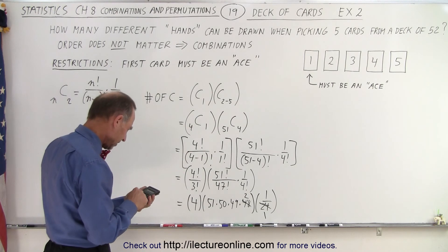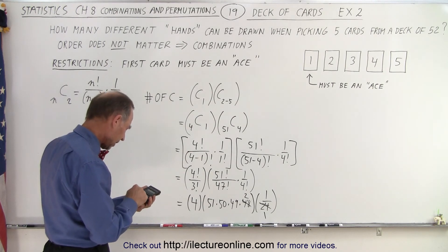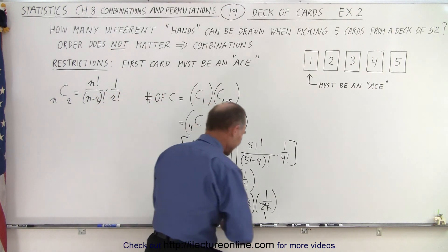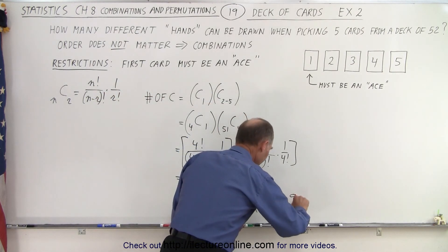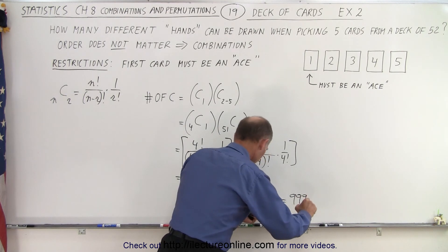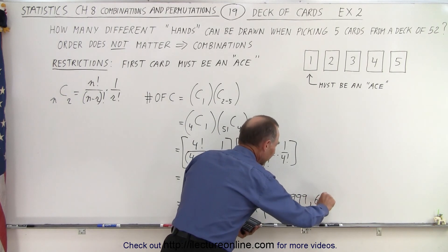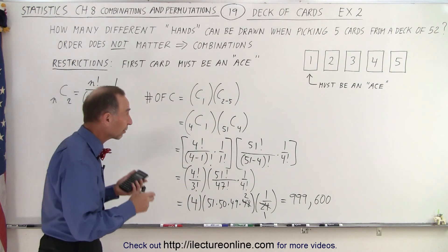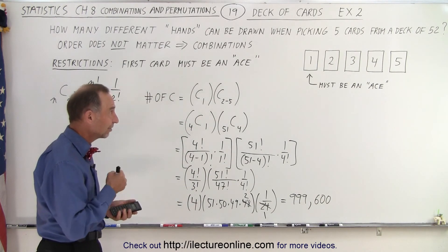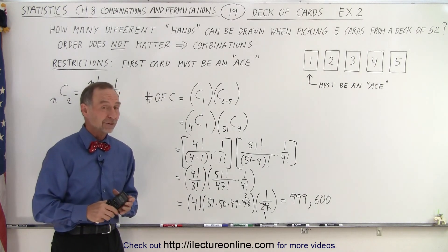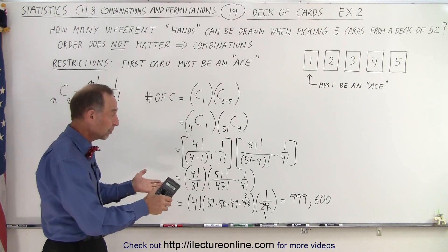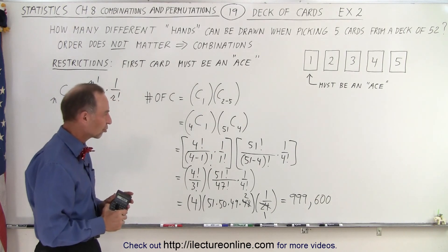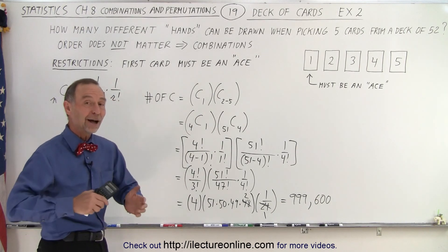Two times four is eight, times 51, times 50, times 49, and we get 999,600 different combinations of hands. If you require that the first card you pull is an ace and the other four cards can be whatever, that went from over two million to less than one million just by adding that one extra restriction. And that is how it's done.